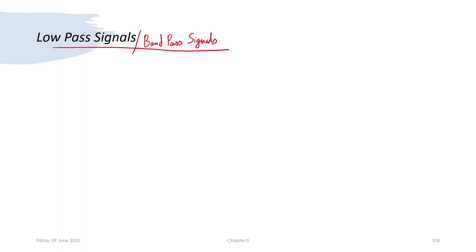Very warm welcome to all of you to another lecture in this series of lectures on simulation of communication systems using MATLAB. In this lecture we will introduce the idea of low pass signals and band pass signals. I will quickly define the notation and then we will continue.